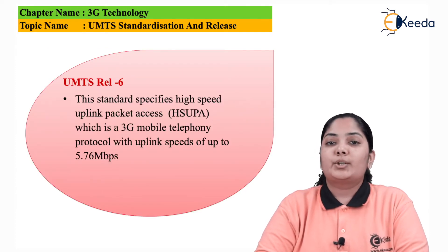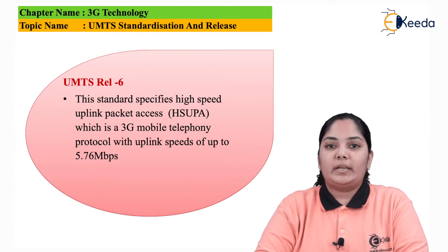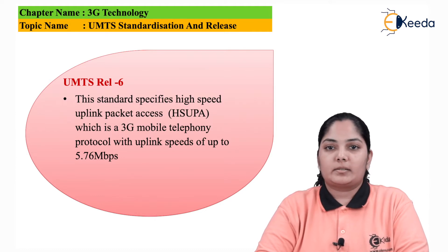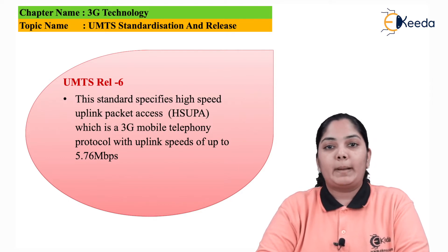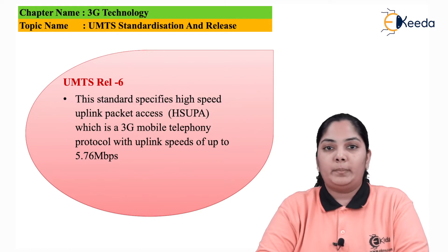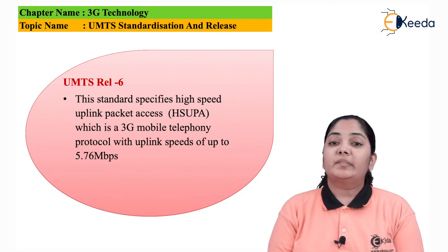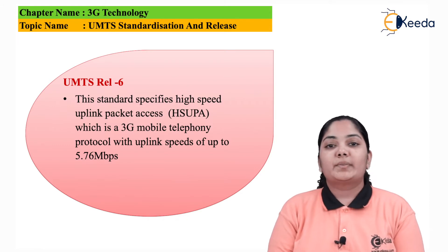The next is UMTS Release 6, which specified HSUPA, standing for High Speed Uplink Packet Access. This is a 3G mobile protocol that gives very high uplink packet data rates in the range of 5.76 Mbps. The technical purpose of the enhanced uplink was to improve capacity and throughput, and to reduce delays.